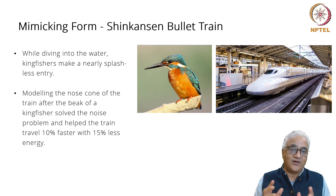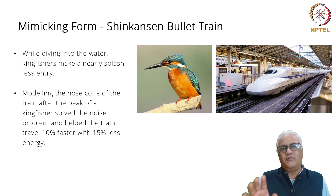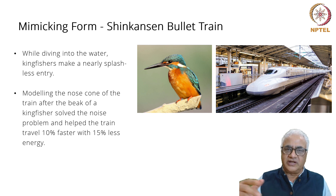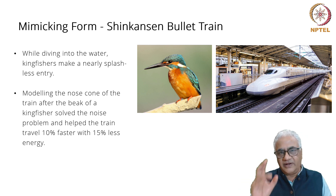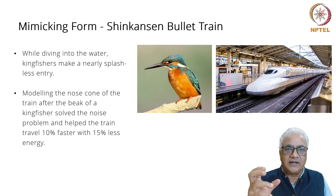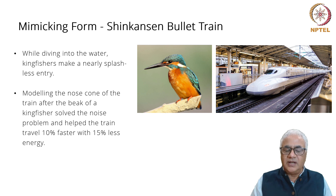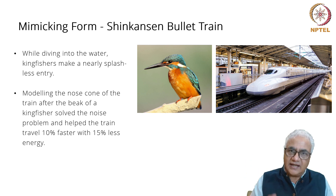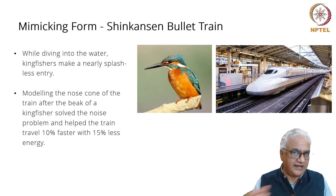That's an unintended but nice consequence — 15 percent less energy. So this is a classic example. One of the things I would advise you to do, if you're teaching biomimicry or want to remember it, always try and find an example. The Shinkansen bullet train is a great example of mimicking form, and the inspiration is from the Kingfisher.